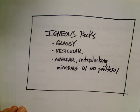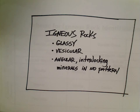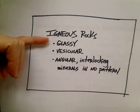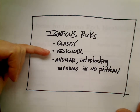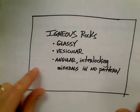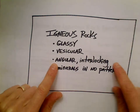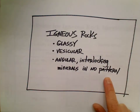First off, I can't stress this enough — to identify an igneous rock, these are the main things you want to look for: glassy texture, or vesicular texture, or angular interlocking minerals in no order or pattern — randomly placed.